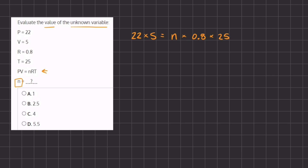On the left-hand side we have 22 times 5, which gives us 110, equals n times 0.8. Instead of 0.8 we can convert it into a fraction so it's easier for us to solve, times 25. Now this 25 we can break up into 5 times 5, and we do so because it's going to allow us to cancel out one of the 5s from the denominator, and then we are only left with 4 times 5 over here. So on the left-hand side we still have 110, and on the right-hand side we have n times 4 times 5, and this 4 times 5 gives us 20, so we have 20n.